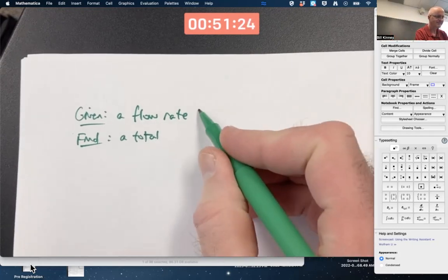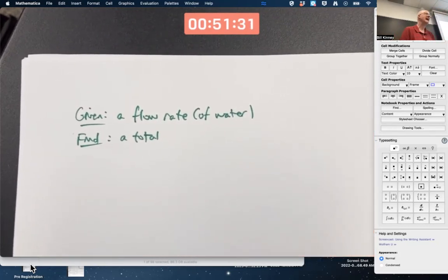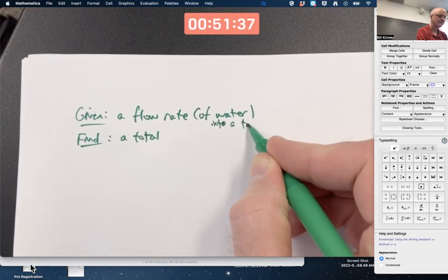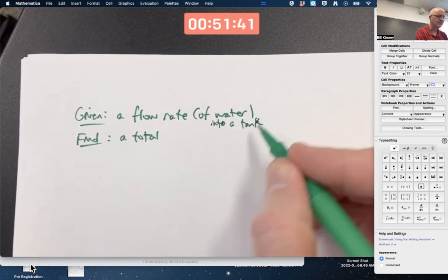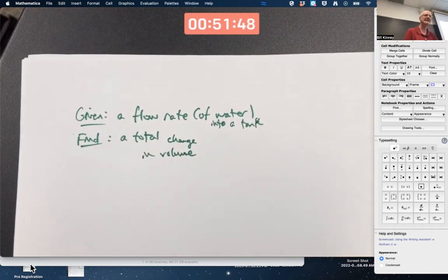Let's imagine it's water into a tank, just to keep it simple. We want to find the total change in volume, which could be the same as the total volume itself if it starts off with no water. Water is flowing into a tank. If there's no water in there to begin with, then the total change in the volume of the water is the same as the volume itself. But if there's some water in there to begin with, then the total change adds on to that.